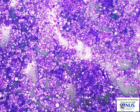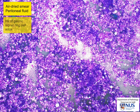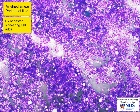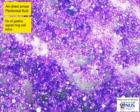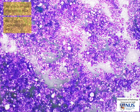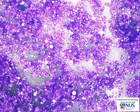Here is an air-dried cytospin preparation from a peritoneal fluid sample in a patient with signet ring cell gastric adenocarcinoma. As we look around, we can see that it is a very cellular sample. There are different populations of cells, and some of them look quite atypical at this magnification.